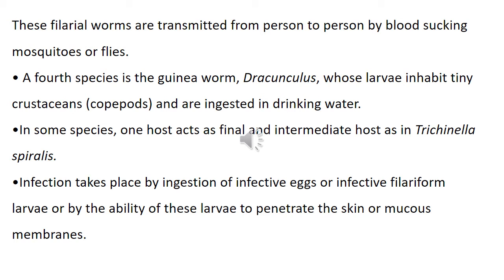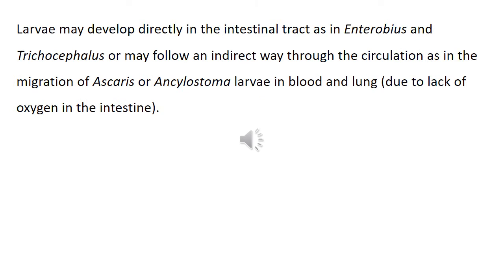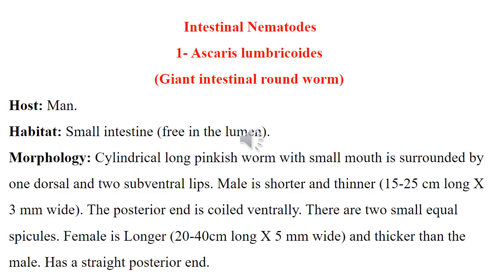These filarial worms are transmitted from person to person by blood-sucking mosquitoes or flies. The fourth species is the Guinea worm, Dracunculus medinensis, whose larvae inhabit tiny crustaceans called copepods, and are ingested in drinking water. In some species, one host acts as both definitive and intermediate host at the same time, as in Trichinella spiralis. Infection takes place by ingestion of infective eggs or infective filariform larvae, or by the ability of these larvae to penetrate the skin or mucous membrane. Larvae may develop directly in the intestinal tract, as in Enterobius and Trichuris, or may follow an indirect way through the circulation, as in the migration of Ascaris or Ankylostoma larvae in blood and lung.